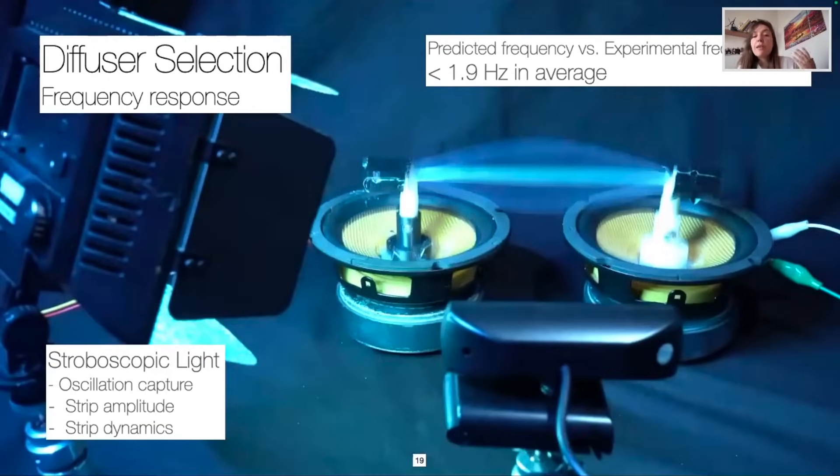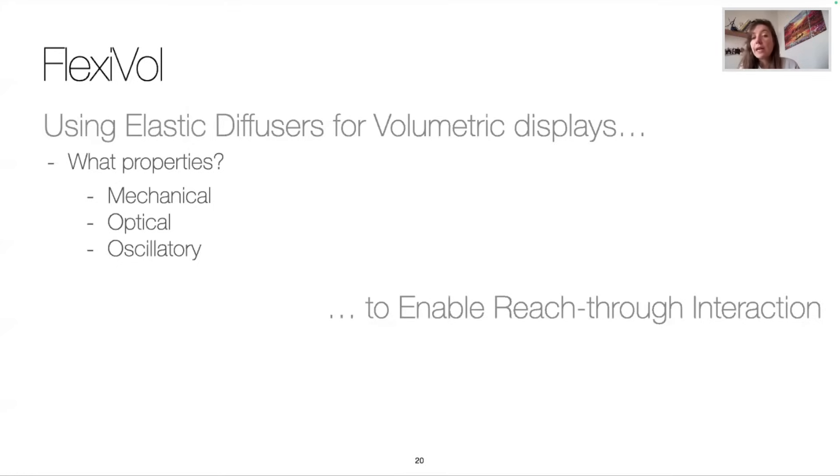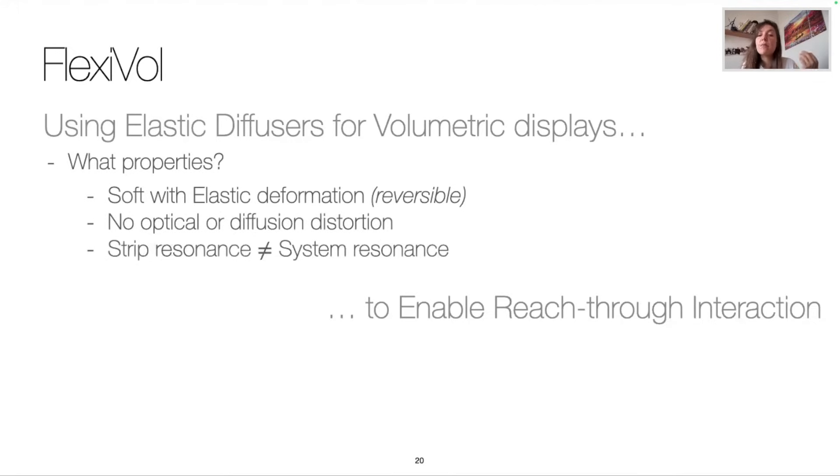So the selection of the materials based on frequency then depends on the resonance frequency of the used device. So now that we characterized the materials, our guidelines are the deformation should remain elastic and not fall into plastic deformation where it permanently deforms or twirls. The optical diffusion should not provide any distortion nor blur, and the resonance of the fabric should be different from the system's resonance frequency.